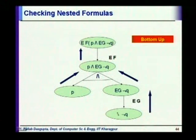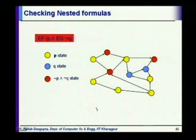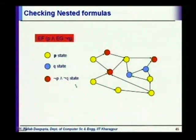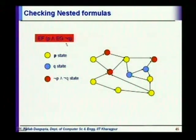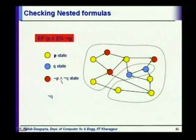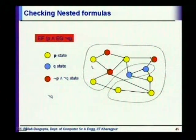Let us look at an example. In this state machine, the yellow-colored states satisfy p, the blue-colored states satisfy q, and the red ones satisfy not p and not q. The property is E F (p and E G (not q)). We start with the set of states satisfying not q, which are the red ones and the yellow ones.